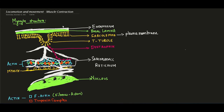In myocytes, the equivalent of the endoplasmic reticulum is the sarcoplasmic reticulum. The normal endoplasmic reticulum is involved in lipid and protein production, but the sarcoplasmic reticulum functions for calcium storage. Other important special features of myocytes include the sarcolemma, T-tubules, dystrophin proteins, sarcoplasmic reticulum, and the contractile proteins actin and myosin.